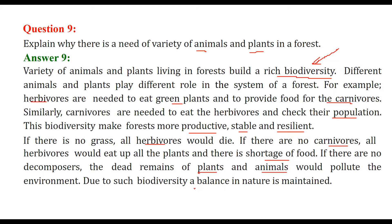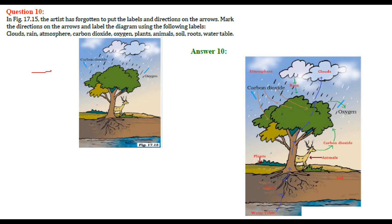Due to biodiversity, a balance in nature is maintained. Now for the diagram labeling: we have cloud, rain, atmosphere, carbon dioxide, oxygen, plants, animals, soil, roots, and water table. The cloud represents the atmosphere, rain comes down, the tree delivers oxygen and takes carbon dioxide, while the deer takes in oxygen and releases carbon dioxide. These are the plants, these are the roots, this is the soil, and this is the water table.